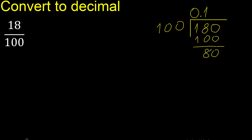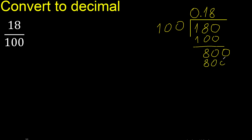Subtract — 80. There is no number that goes down, therefore complete — always complete with 0 point here. 100 multiplied by which number is nearest to 800? Multiplied by 8 is exact: 800.